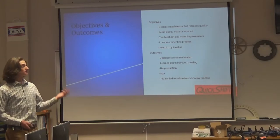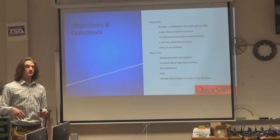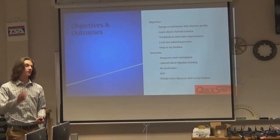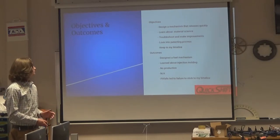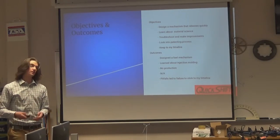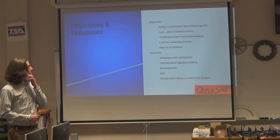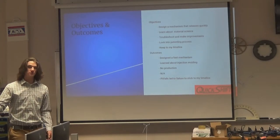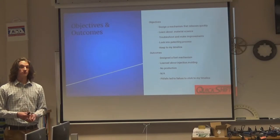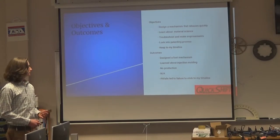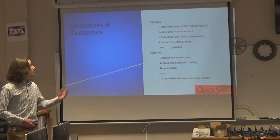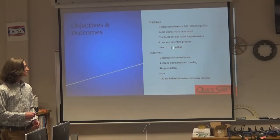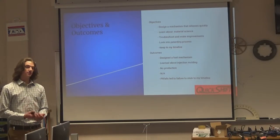So my objectives, I wanted to design a mechanism that would release quickly. Because people can change out their own shift knobs, but it takes time, and I wanted it to be a quick, ten-class second process. I wanted to learn about material science and production science. And then I wanted to troubleshoot and make improvements on a real product, because I was going to actually make it using a CNC machine. And I greatly overestimated myself. I wanted to patent it, but that didn't happen, because I didn't have an actual product. And I wanted to keep to my timeline, and stay timely, and keep in contact with my advisors.